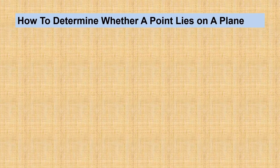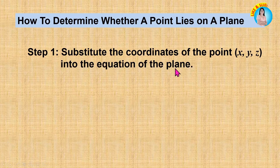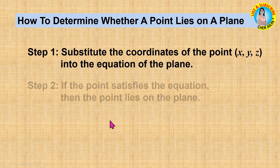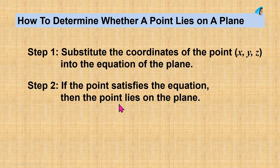Now we are going to determine whether a point lies on a plane. To do this, we substitute the coordinates of the point into the equation of the plane. If the point satisfies the equation, then the point lies on the plane.